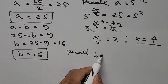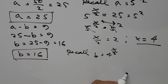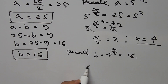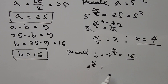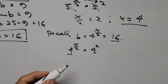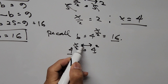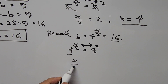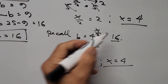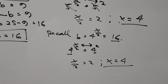For the second variable, b equals 4 to the power of x over 2, and this equals 16. Since 16 can be expressed in base 4 as 4 squared, and we have the same base, we equate exponents: x over 2 equals 2, so x equals 4. Both variables confirm the same answer.